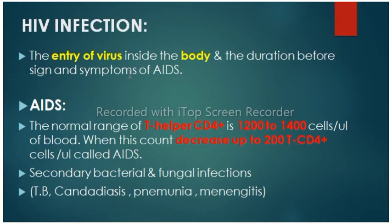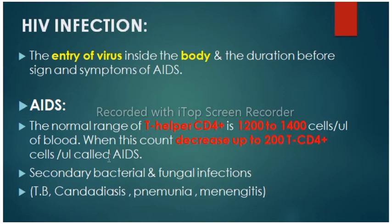What is the difference between HIV infection and AIDS? HIV infection is the entry of the virus inside the body and the duration before signs and symptoms of AIDS appear. The normal range of T helper CD4 cells is from 1200 to 1400 cells per microliter of blood. When this count decreases to 200 T helper CD4 cells per microliter of blood, it is called AIDS. Then secondary bacterial and fungal infections start, like TB, candidiasis, pneumonia, and meningitis.